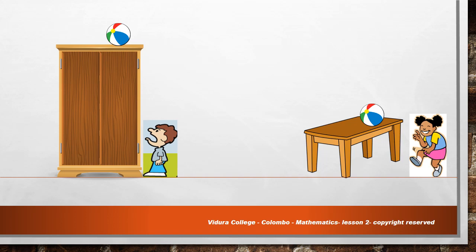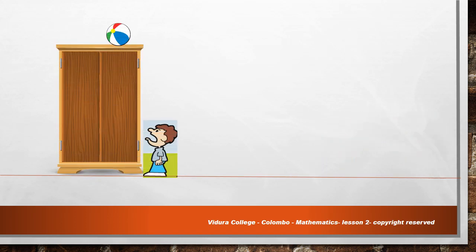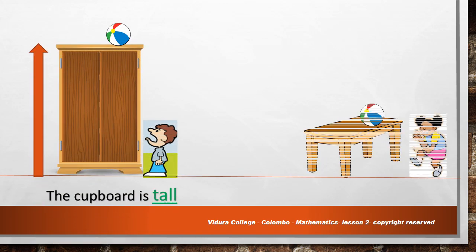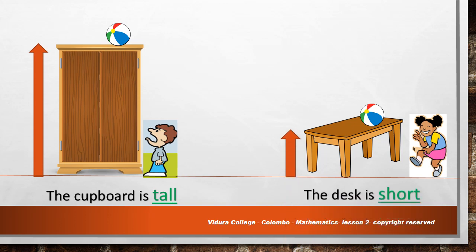Now look at the next picture. Can the girl get the ball which is on the desk? Yes, easily she can get it because the desk is short. Now again tell me why the boy couldn't take the ball? Because the cupboard is tall. Now you know tall is when something has a greater height.